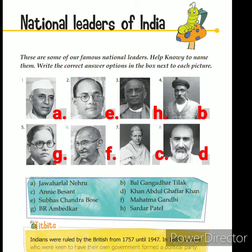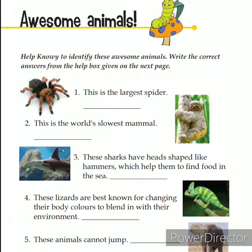The sixth picture is of Mahatma Gandhi, option F. The seventh picture is of Annie Besant, option C. And the eighth picture is of Khan Abdul Gaffar Khan, option D. I know you must have marked the answers. Now we will do page number 30.